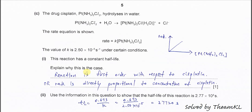Part C: the drug cisplatin is hydrolyzed in water by ligand exchange — one chloride is exchanged with H₂O. The rate equation is: rate = K[cisplatin], so the reaction is first order with respect to cisplatin and first order overall. The K constant given is 2.5 × 10⁻⁵. Part 1: the reaction has a constant half-life. A constant half-life tells us the reactant must be first order.